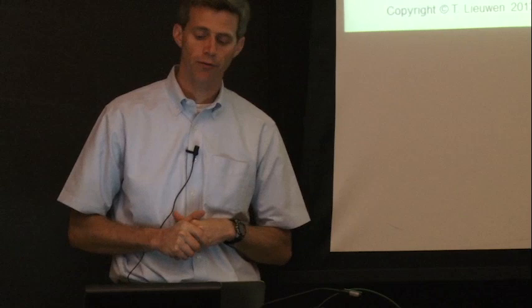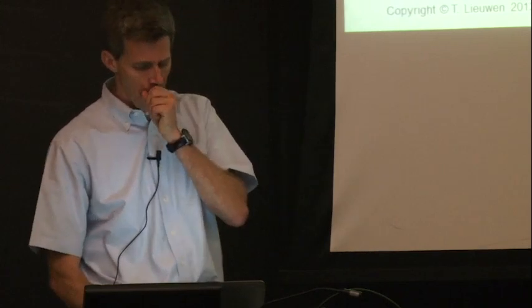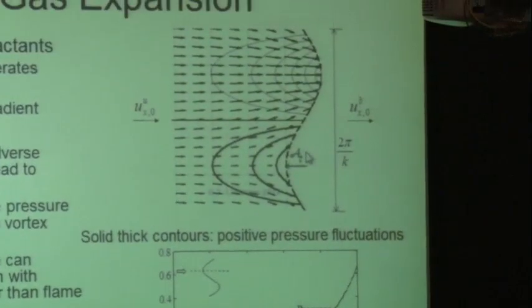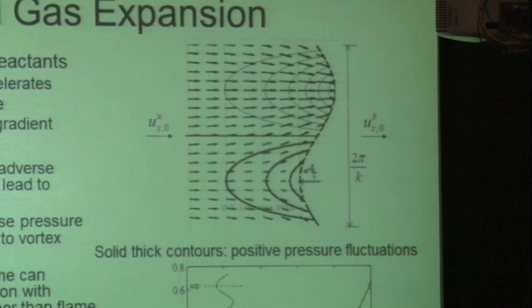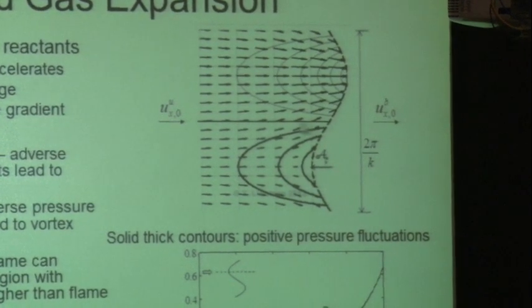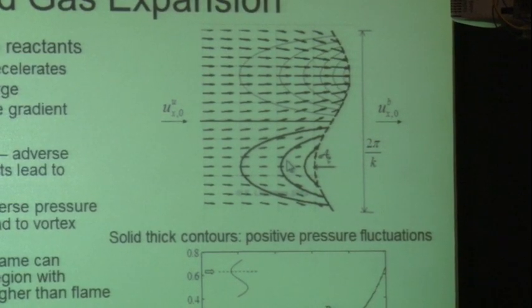The question of why a bulging flame front modifies the streamlines is a great one. When you work out the coupled momentum and continuity equations, this is what you get. But beyond the math, it's complicated: curving the flame produces vorticity, and that vorticity alters the flow field as well. I can't give a simple back-of-the-envelope explanation for why a curved flame does this to the flow.